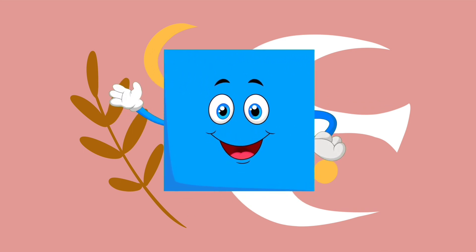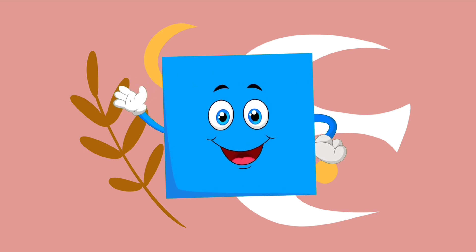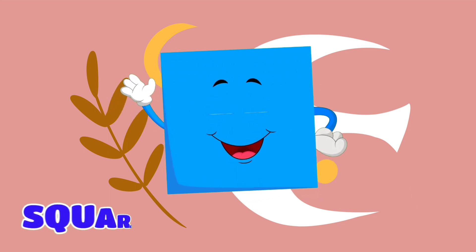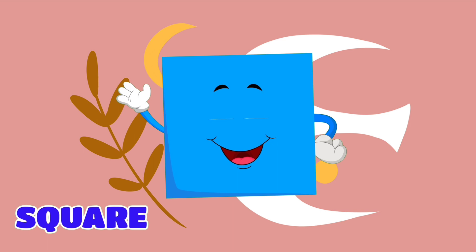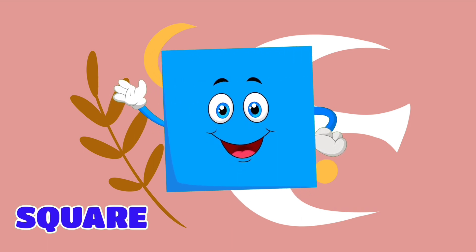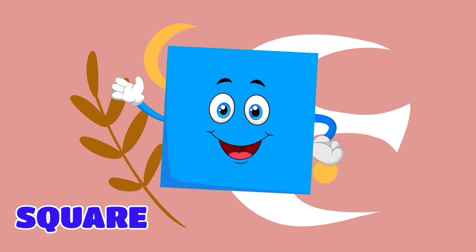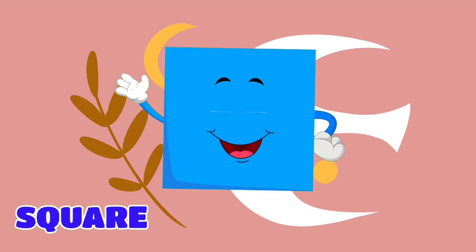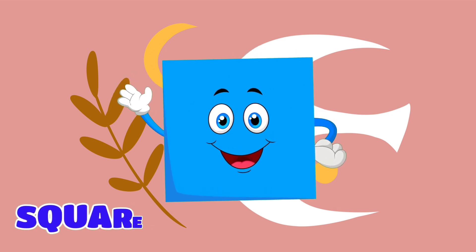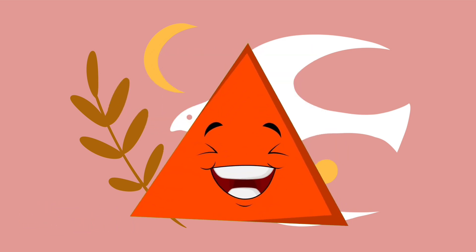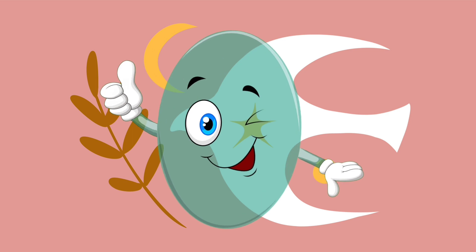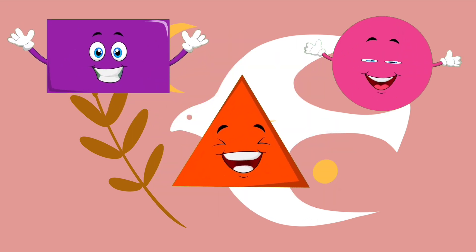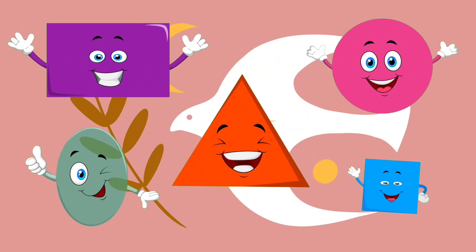I'm a four-sided square, shaped like a box. I'm a four-sided square, shaped like a box. I'm a four-sided square, and all four sides are the same. Triangle, rectangle, circle, oval, square. Triangle, rectangle, circle, oval, square.